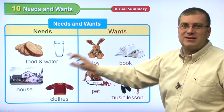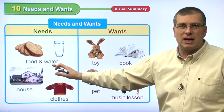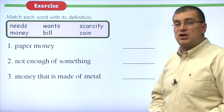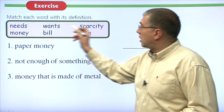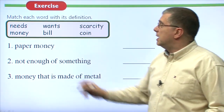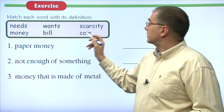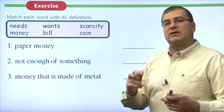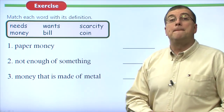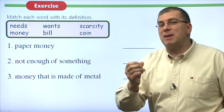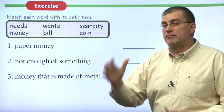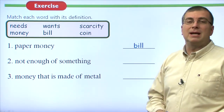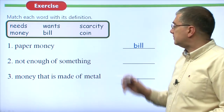Needs are absolutely things we must have to survive. Wants are things we wish that we had. Let's go on to the matching words — we'll match the words with the definitions. Our words are: needs, wants, scarcity, money, bill, and coin. Number one: paper money, money that is made from paper, usually larger amounts of money — we call that a bill. Remember, we can also call them notes, but here we say bill.